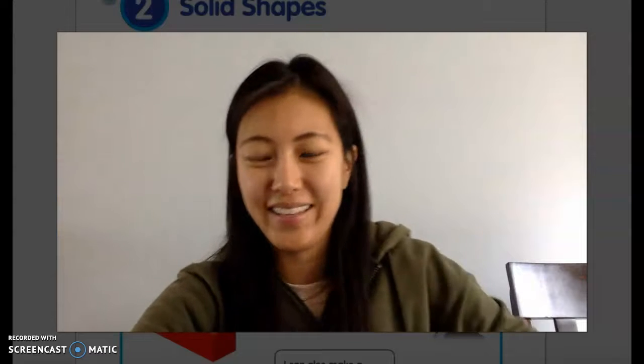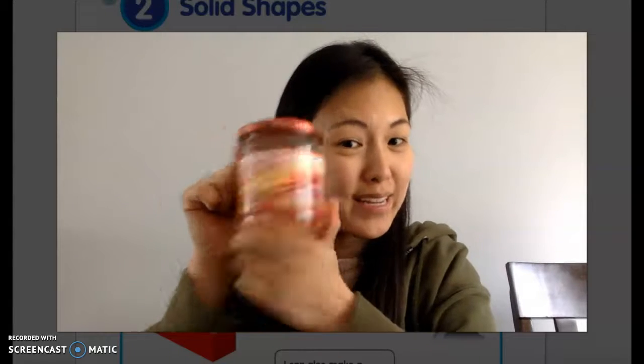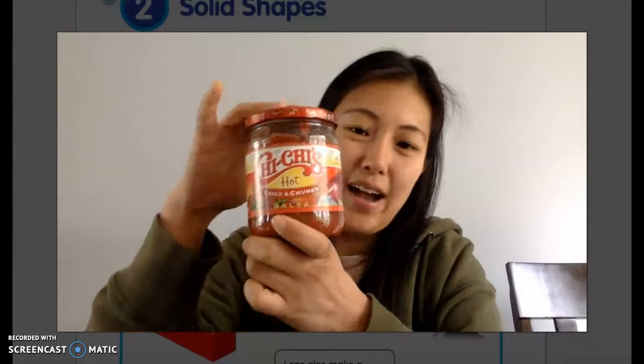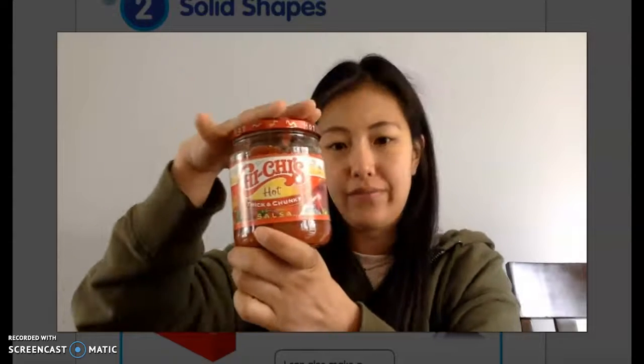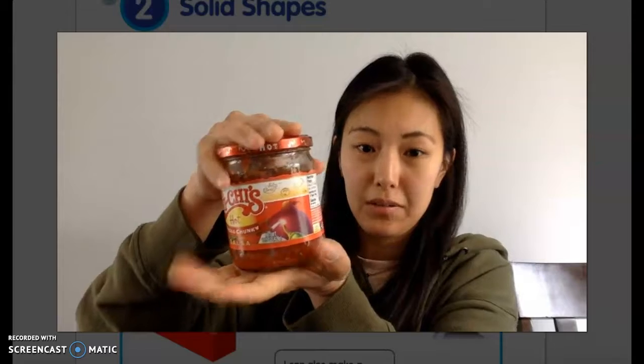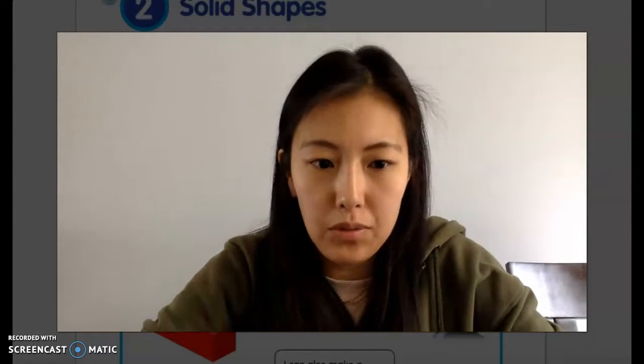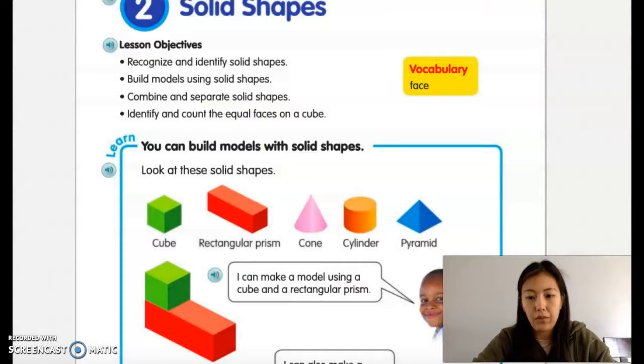And then I finally have another solid shape. Yes it's a salsa jar, but here I have a cylinder with a flat surface on the top and flat surface on the bottom. So those are some solid shapes that you can find throughout your house. Some of you might be able to find some cones and some pyramids in your house as well.